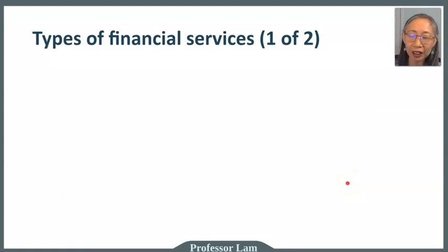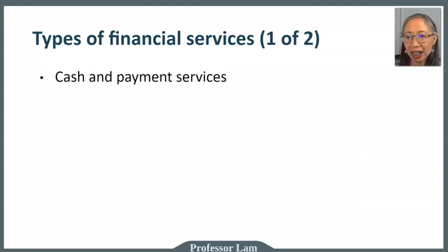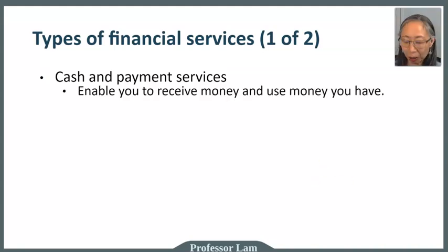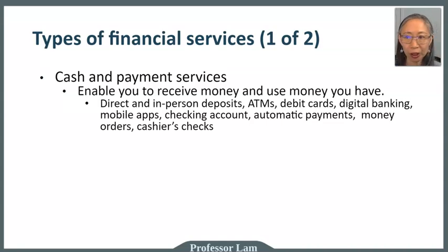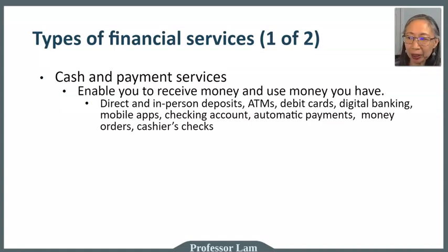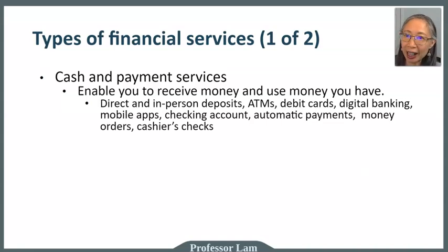It is helpful to define the different types of services clearly. The first is cash and payment services — the most common banking services. You can receive money and also use the money that you have. Examples include making deposits in person or by direct deposit, using an ATM to get money, using your debit card to access money directly from your checking account, paying bills online, using a mobile app, automatic payments, and recurring payments. Debit cards use money that you already have in your banking account.